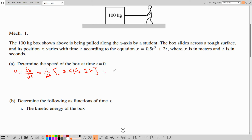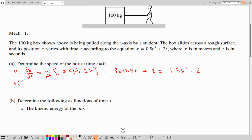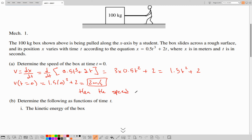The cubic term becomes quadratic: 3 times 0.5t squared. We reduce the power by 1, and the linear term becomes a constant. So v equals 1.5t squared plus 2. No unit is placed since it's expressed in terms of another parameter. The velocity at t equals 0 is 1.5 times 0 squared plus 2, which gives 2 meters per second. Since the value is positive, the speed is 2 meters per second.